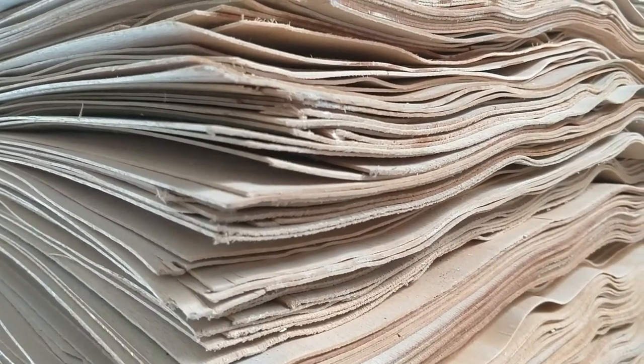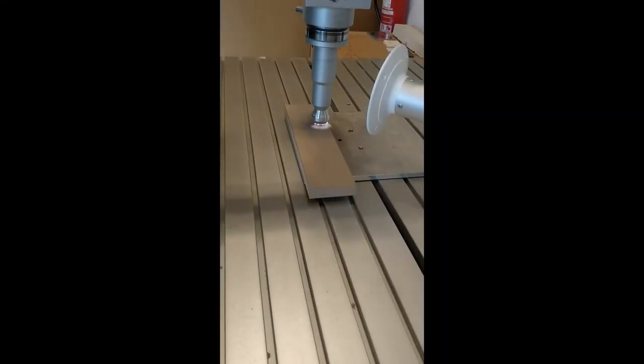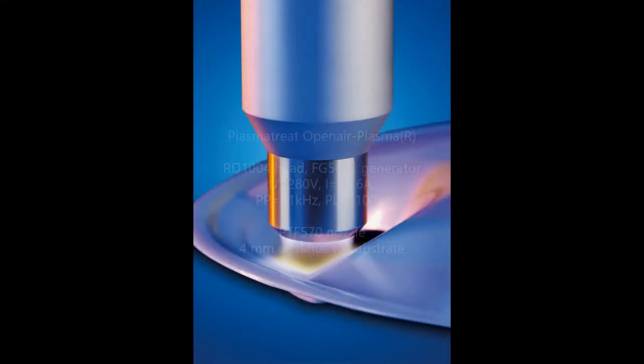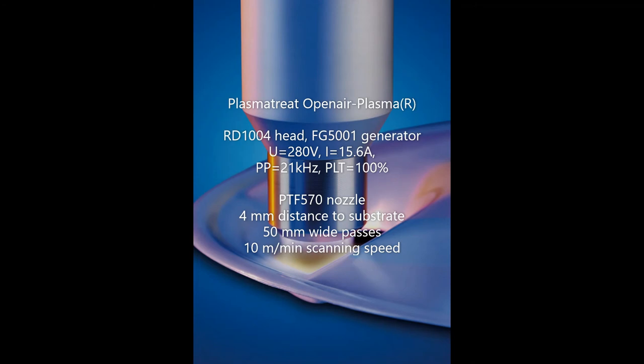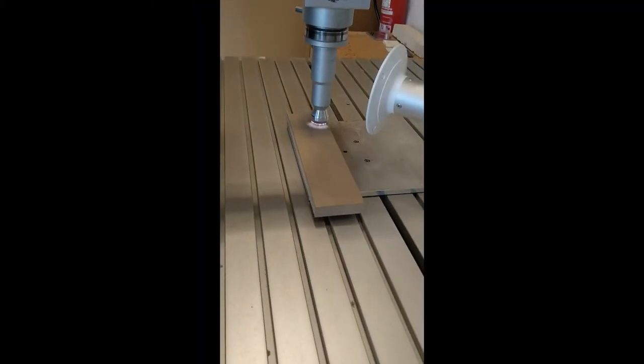In this study, we used 1 mm thick veneers of Common Beech. A plasma treat open air unit with a PTF 570 nozzle was used at 4 mm distance to the veneers to treat them at 10 m per minute in passes of 50 mm.